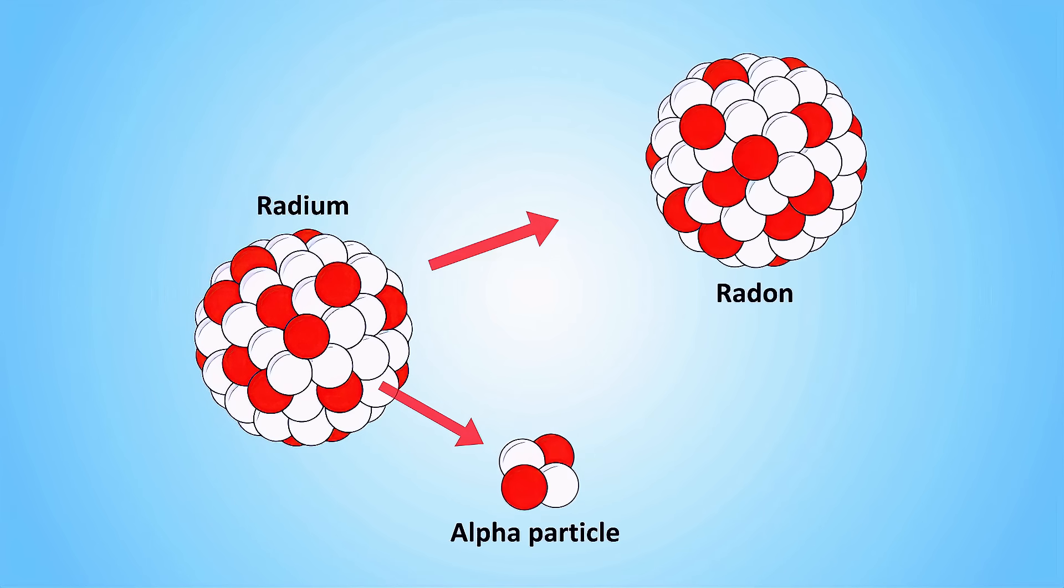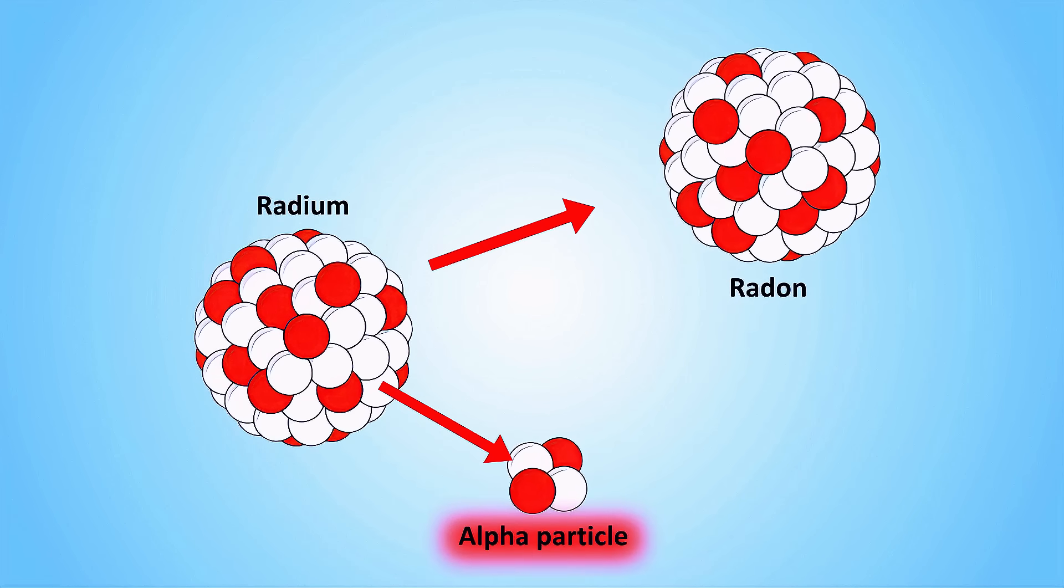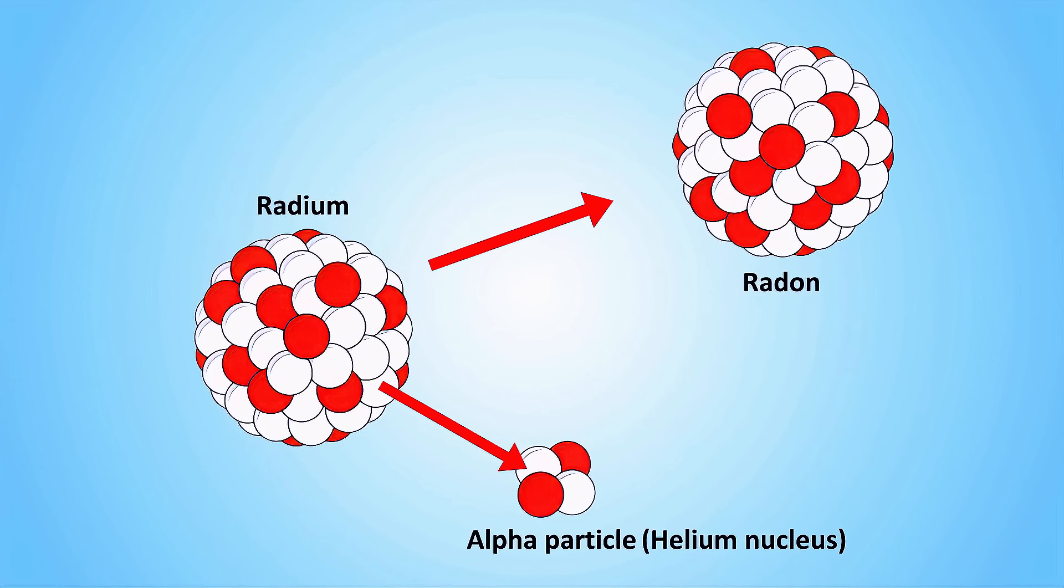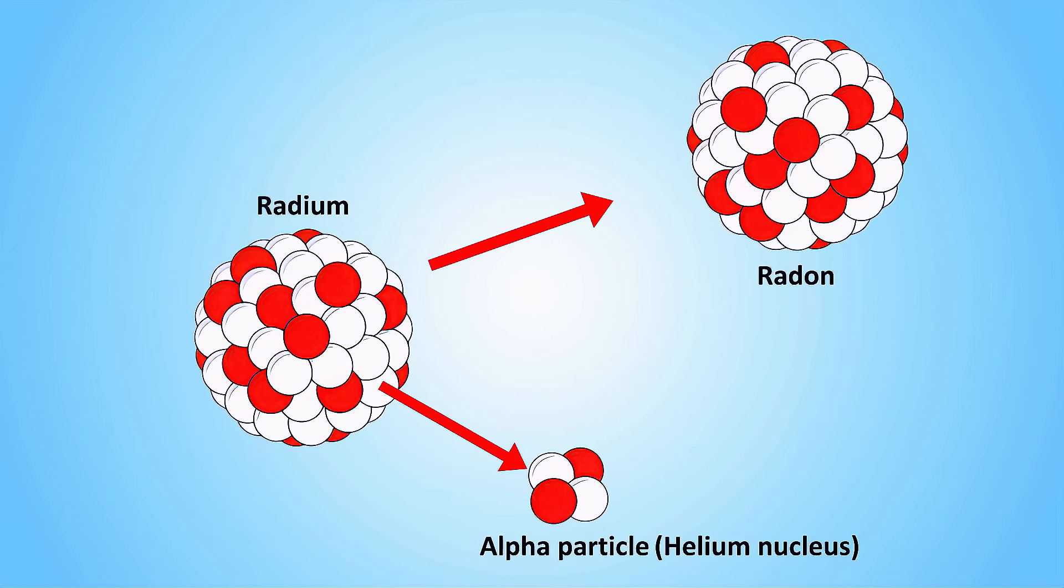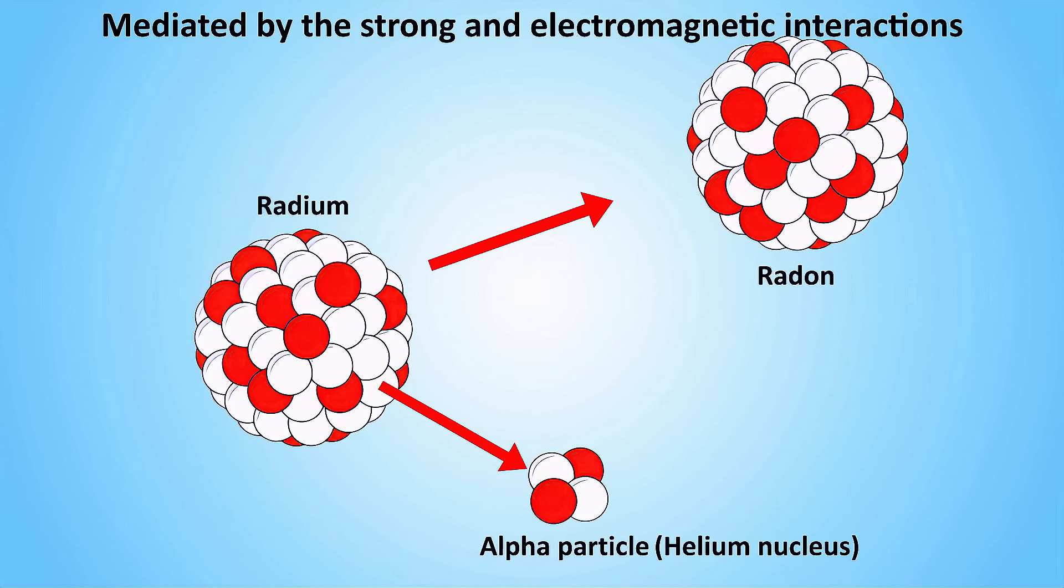But the strong force isn't the only player in the quantum game. In some types of atoms, radioactive processes can occur that modify the composition of a nucleus. The most well known is alpha decay, where a nucleus splits into smaller pieces by ejecting an alpha particle made up of two protons and two neutrons, which is the same as a helium nucleus. This is mediated by the strong and electromagnetic interactions.